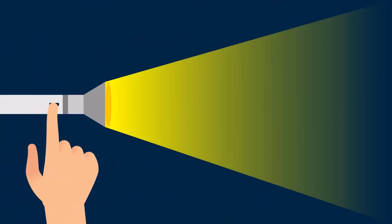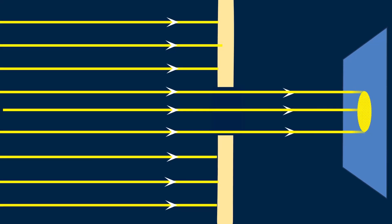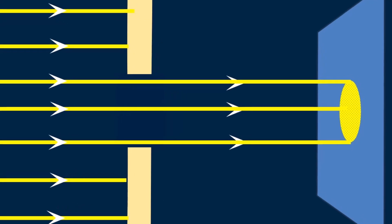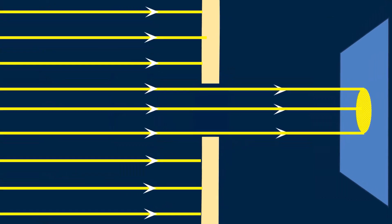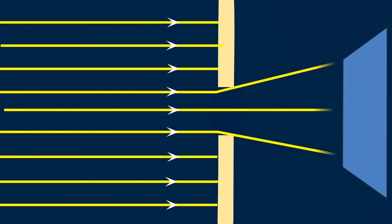Welcome to our fascinating world of light. Imagine some shining parallel rays of light passing through a tiny hole in a cardboard. Intuitively, based on Newton's idea of light as particles, you would expect these light particles to pass straight through the hole, creating a sharp image on the screen. However, careful experiments reveal something quite different. Instead of a sharp shadow, the light spreads out and forms a larger spot on a screen placed behind the hole.